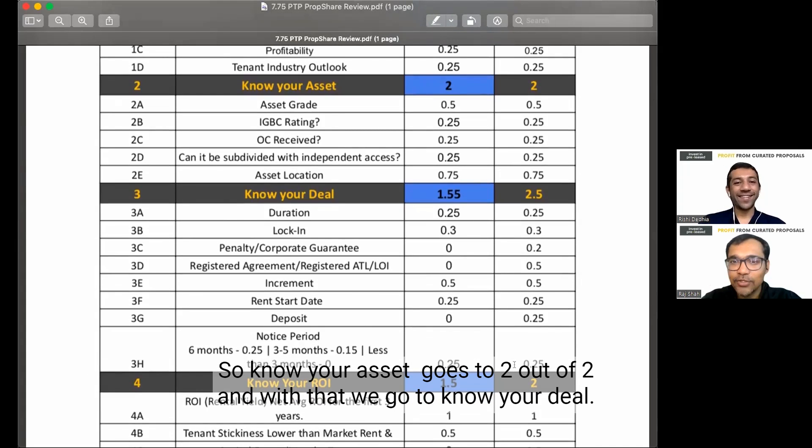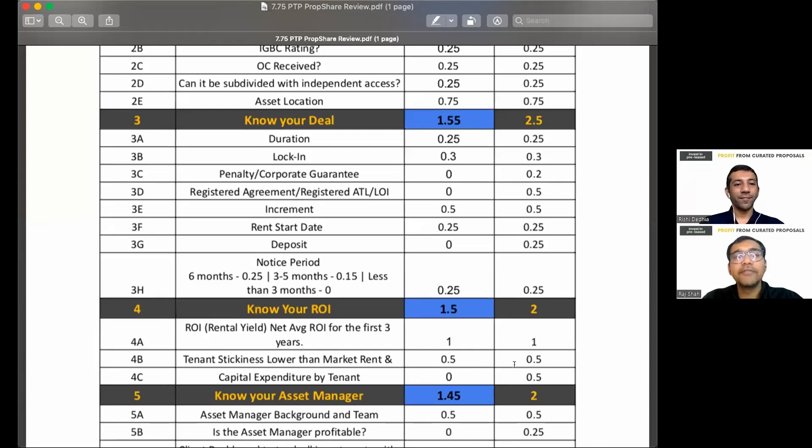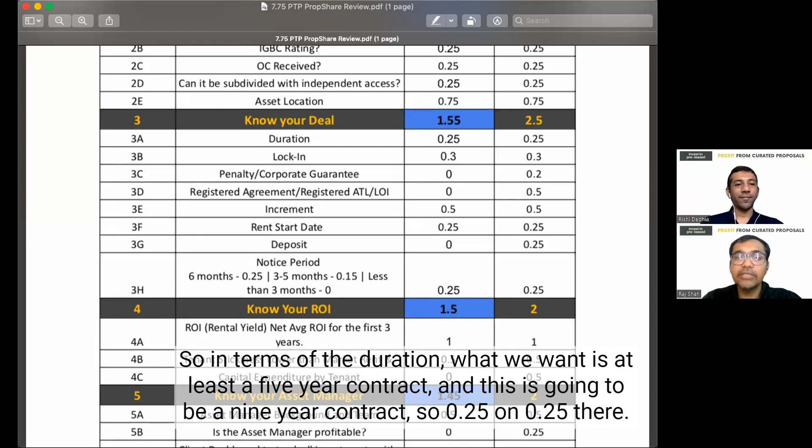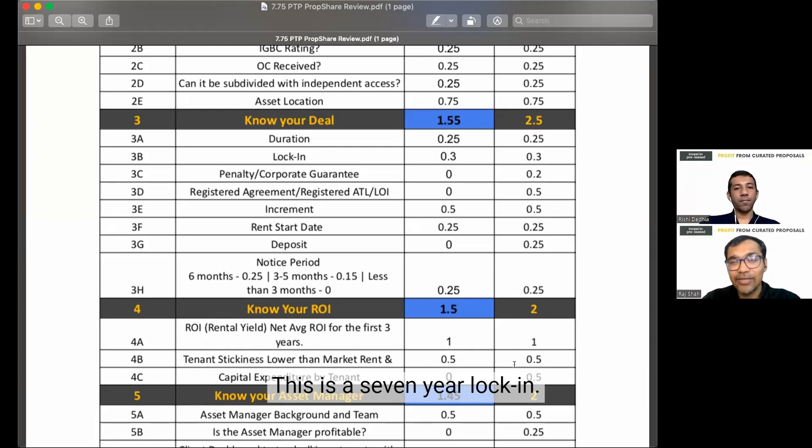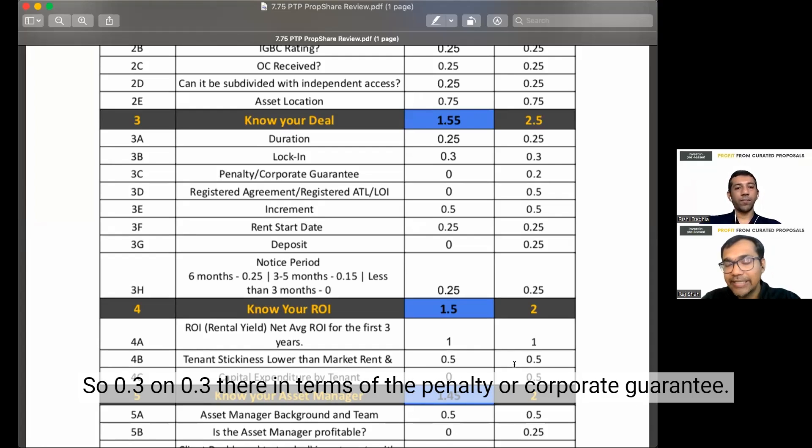So Know Your Asset goes to 2 out of 2. And with that, we go to Know Your Deal. We now come to knowing the deal. So in terms of the duration, what we want is at least a 5-year contract. And this is going to be a 9-year contract. So 0.25 on 0.25 there. In terms of the lock-in, we would like at least a 3-year lock-in. This is a 7-year lock-in. We are very excited. This is great. So 0.3 on 0.3 there.